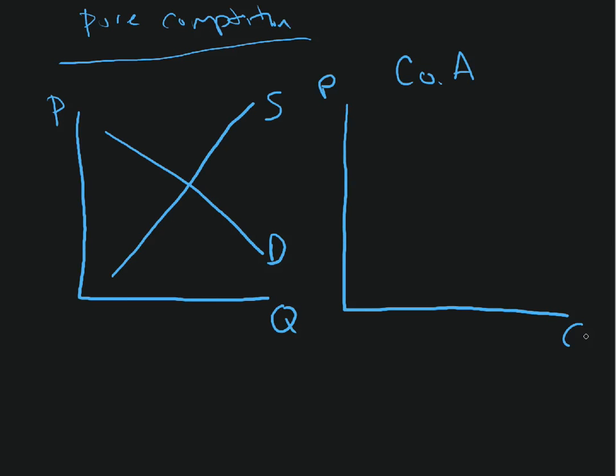Now they take the price, the equilibrium price. Let's say it's $3, and that's what they can sell their product for. So we get this kind of straight line at $3, and we call that their marginal revenue.